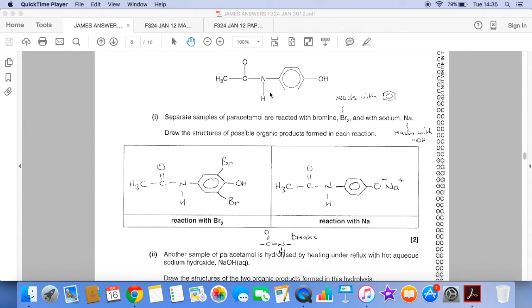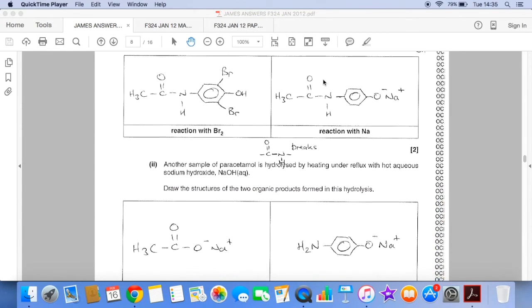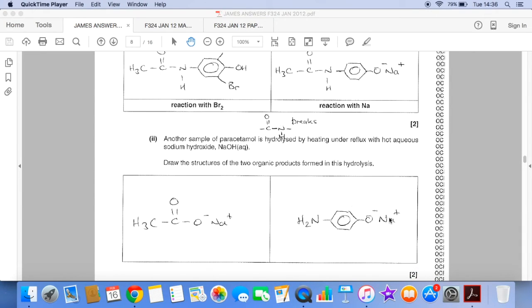And what's this going to become? Well, we're going to reform this NH2 group. But the sodium hydroxide could react at this end of the structure. And so we're going to get that O minus Na plus with the NH2 group reformed.